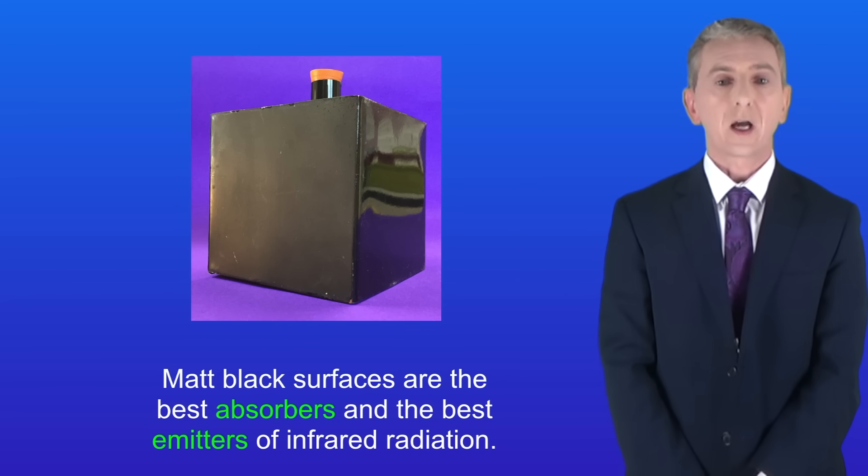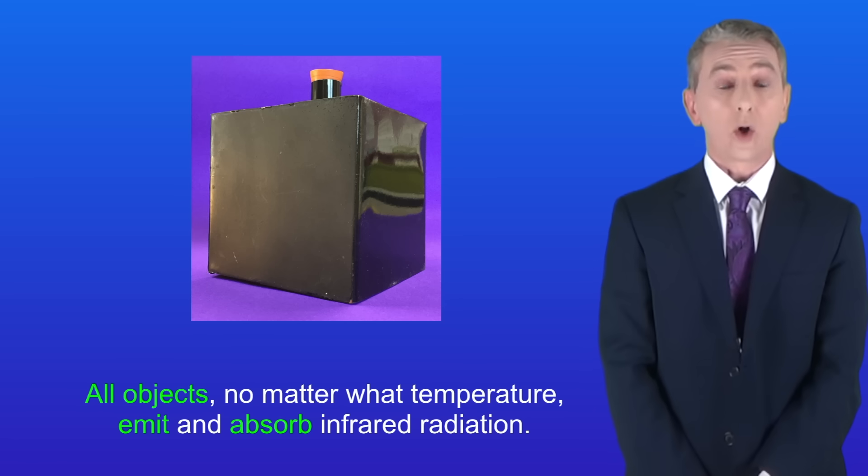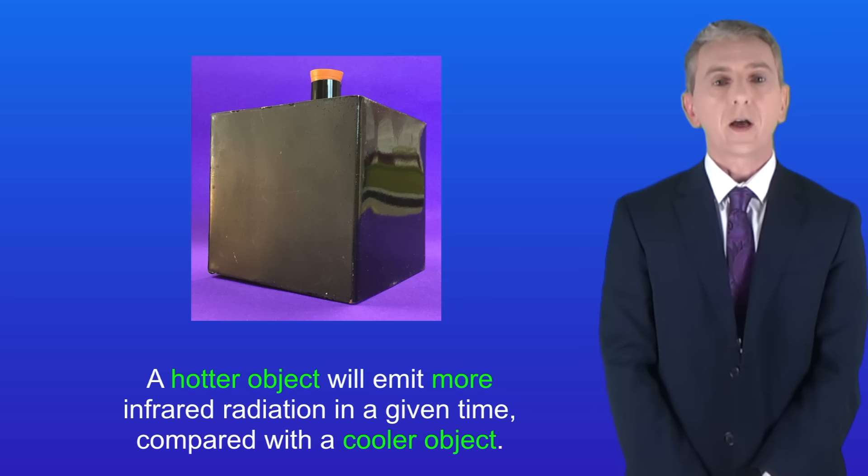In a previous video we looked at how infrared radiation is absorbed and emitted from different surfaces. We saw that matte black surfaces are the best absorbers and the best emitters of infrared radiation. Now you need to understand that all objects, no matter what temperature, emit and absorb infrared radiation. However, a hotter object will emit more infrared radiation in a given time compared with a cooler object.